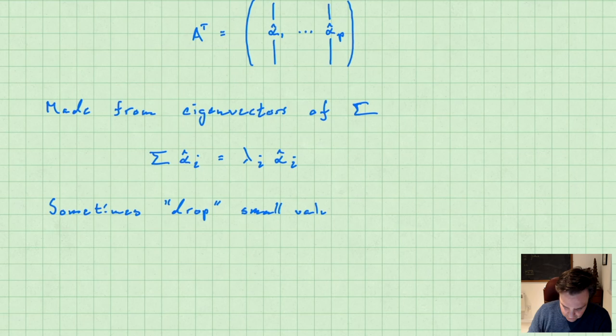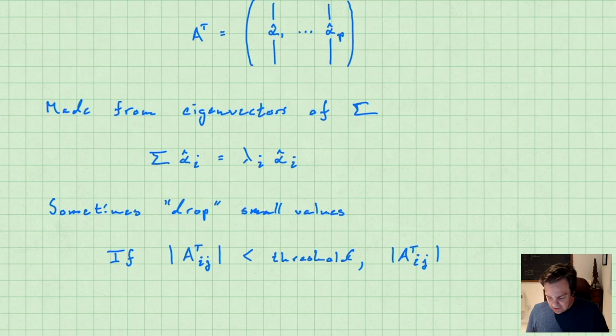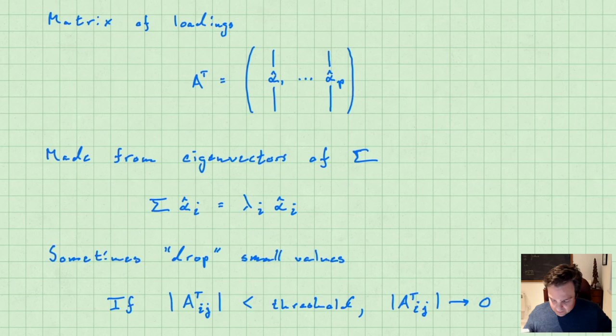The approach is: if the absolute value of some element a-ij in the matrix of loadings is below some threshold, set it to zero. This would simplify the matrix of loadings and remove fine noise, depending on what your criterion is for determining that threshold.